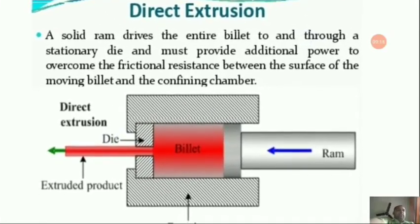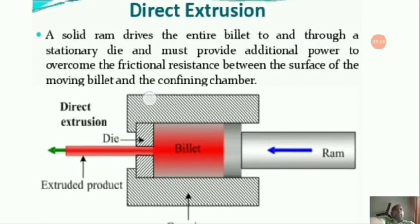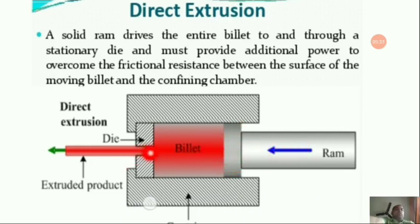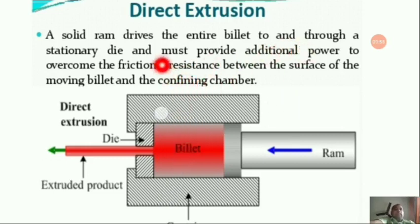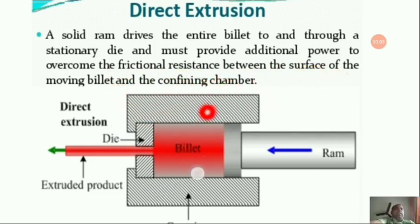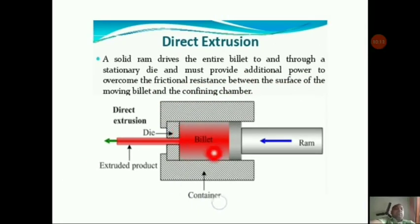In direct extrusion, a solid ram drives the entire billet to and through a stationary die. You can see the die, the billet where the hot metal is being pressed, and the ram. Due to the pressure of the ram, the hot metal is pushed out of the opening and takes the shape of that opening. The ram must provide additional power to overcome the frictional resistance between the surface of the moving billet and the confining chamber. This is the container and this is the die with its opening — this is the direct extrusion process.